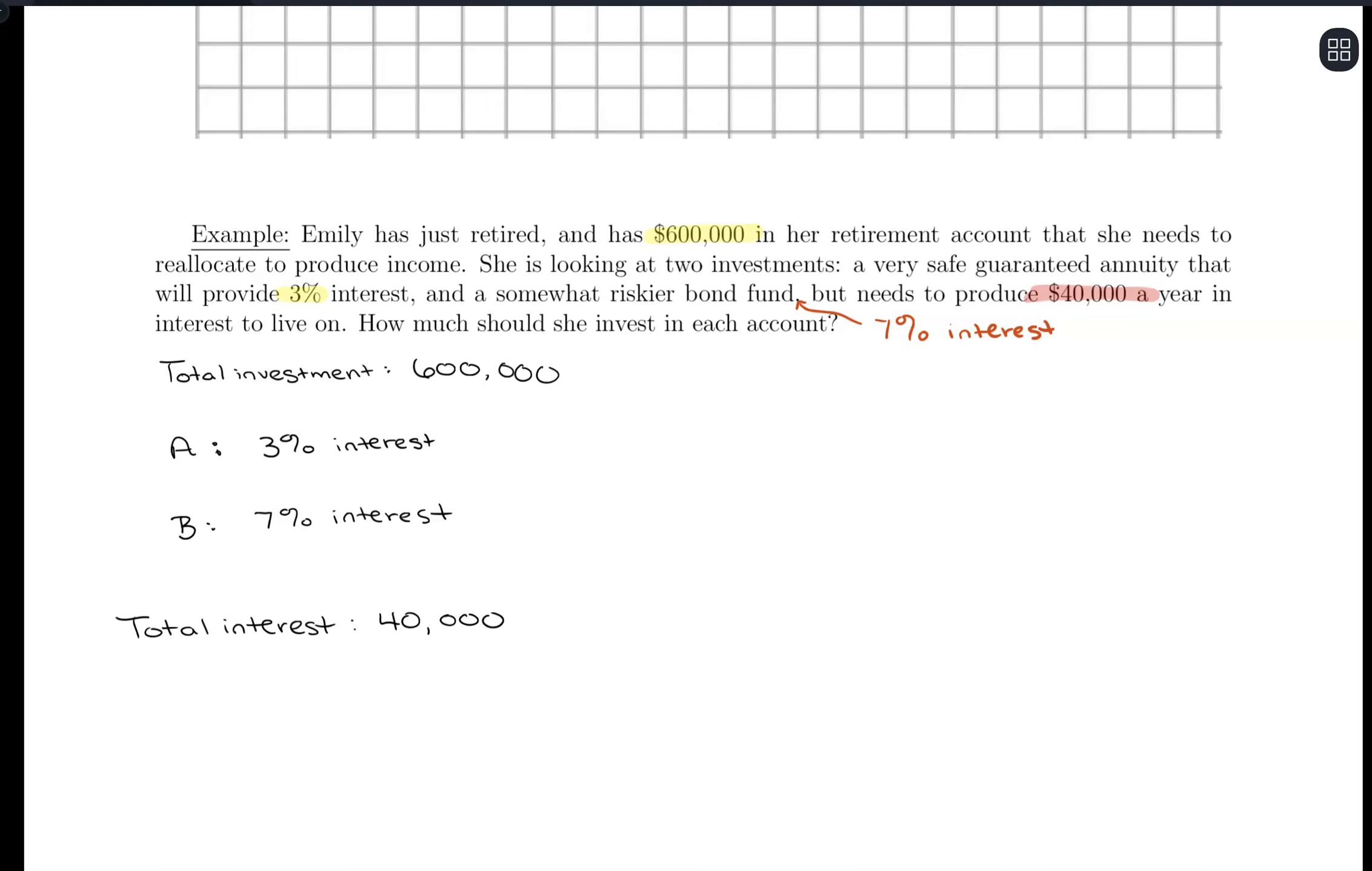So when we find that interest, we want that total interest to be $40,000. All right, so what we want to know is how much to invest in A and how much to invest in B. Now, the total investments, if I take the investment into A plus that investment into B, that should total $600,000.